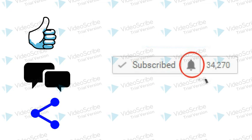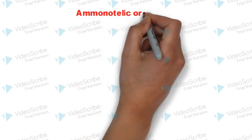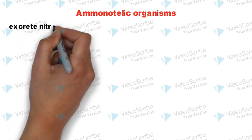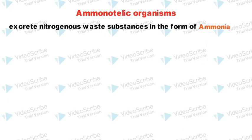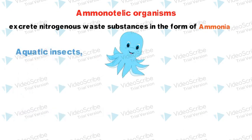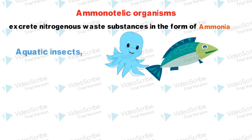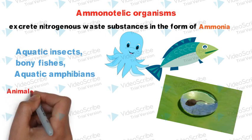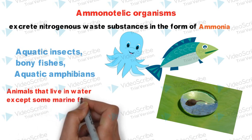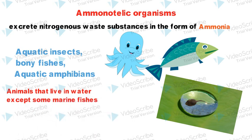Let's start with Ammonotelic organisms. These are the organisms which excrete nitrogenous waste substances in the form of ammonia. The examples are octopus, aquatic insects, bony fishes and aquatic amphibians like tadpoles. Basically these are the animals that live in water except some marine fishes. The trick to remember Ammonotelic organisms is A for ammonia and A for aquatic.